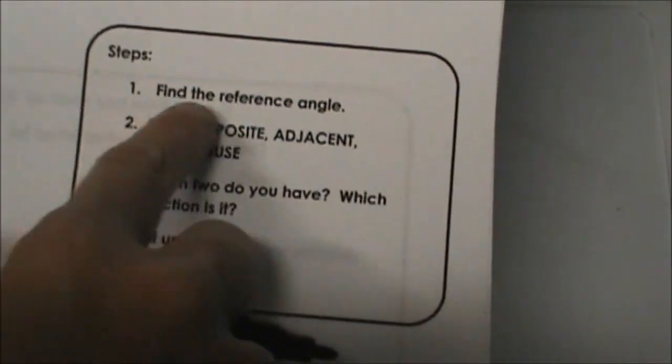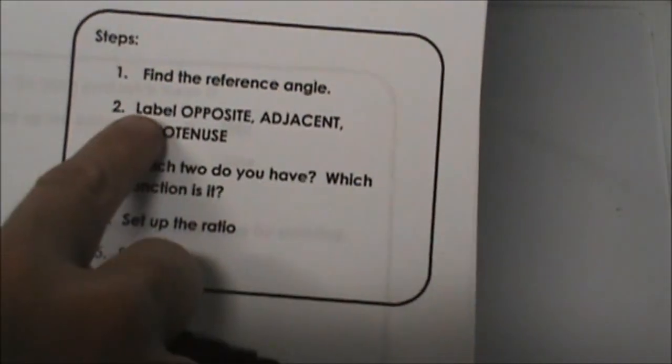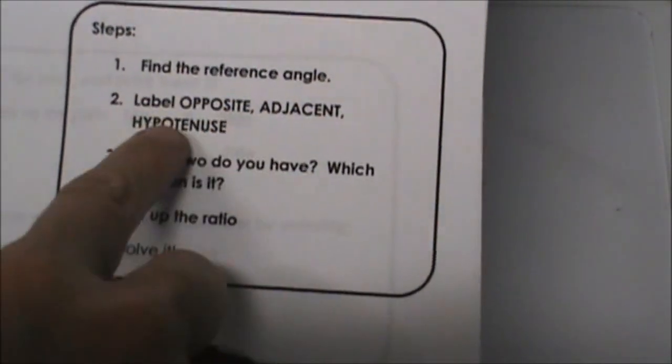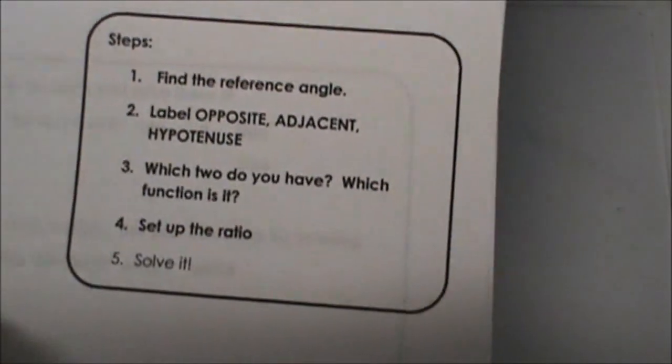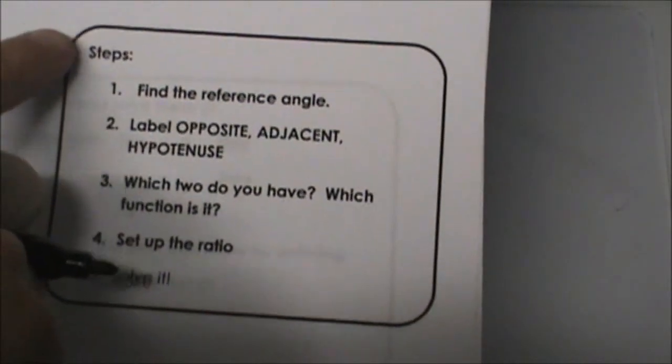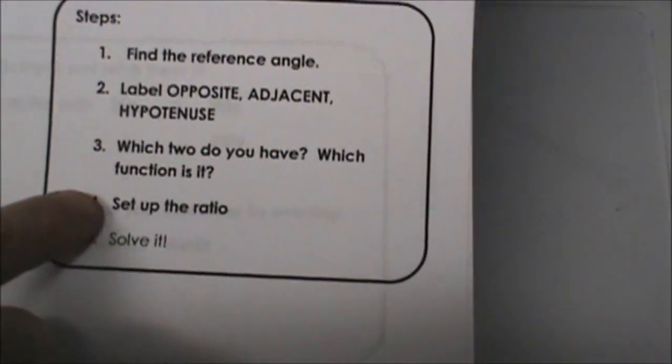The first step is to find the reference angle, then label the opposite, adjacent, and hypotenuse based on that reference angle, then decide which trig function we are going to use when we are going to set it up. The first part I am going to show you is just how to do these four steps.